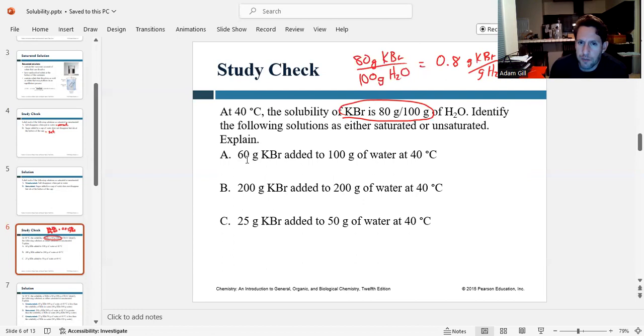Now for situation A, we have 60 grams in 100 grams of water. So 60 over 100 is the same thing as 0.6. So if you compare that to our value of 0.8, it's less than the maximum. And so we would say that this is unsaturated.